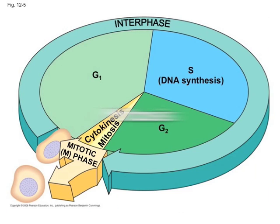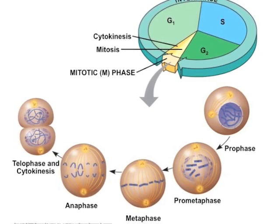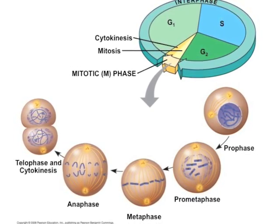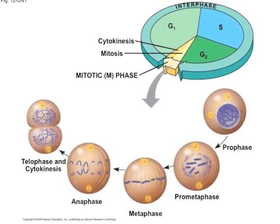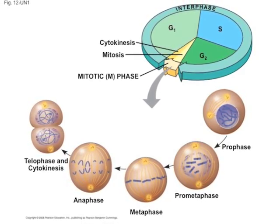The cell cycle consists of three components: interphase, mitosis, and cytokinesis. A cell is in interphase for the majority of its life. Interphase consists of G1, S, and G2. In G1, enzymes are made. In S, the DNA is copied for mitosis, and in G2, the rest of the organelles that are needed are copied.